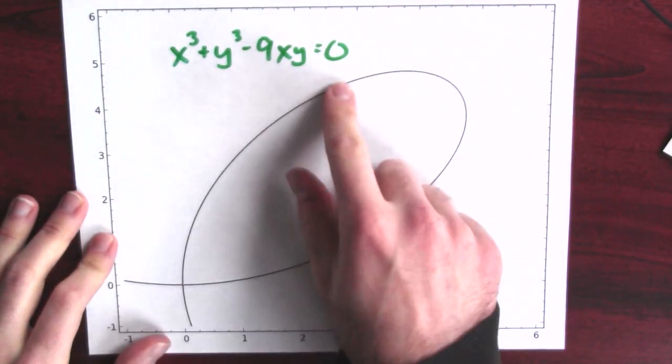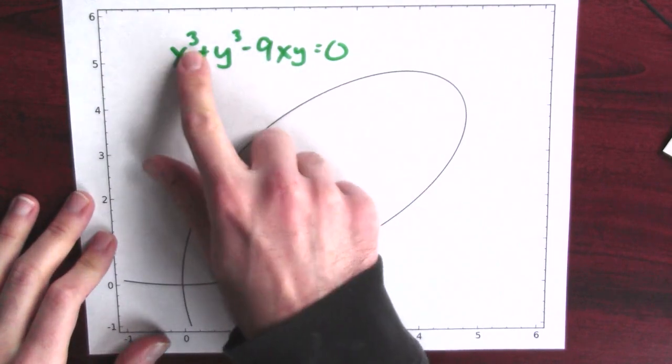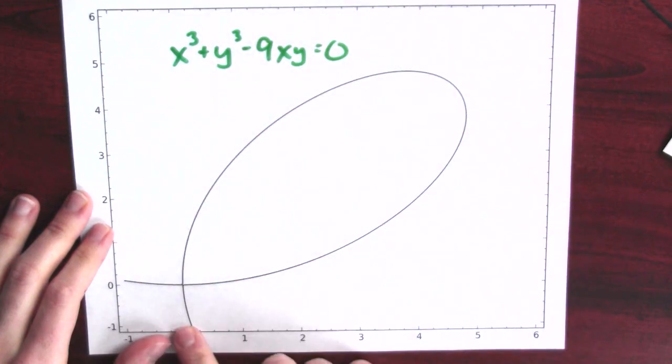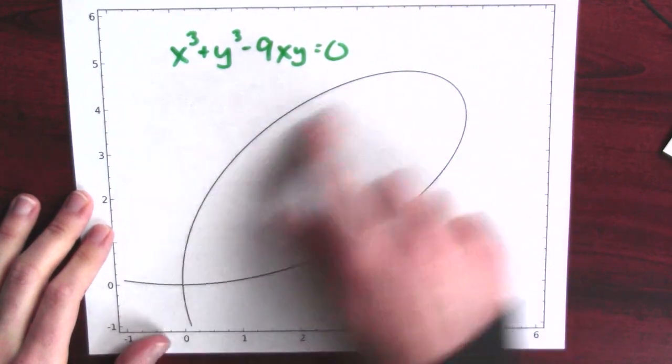So where's the leaf? Well, here's the leaf. I've plotted the points in the plane that satisfy x cubed plus y cubed minus 9xy equals 0. And this is the curve that I get, and you can see it looks kind of like a leaf.